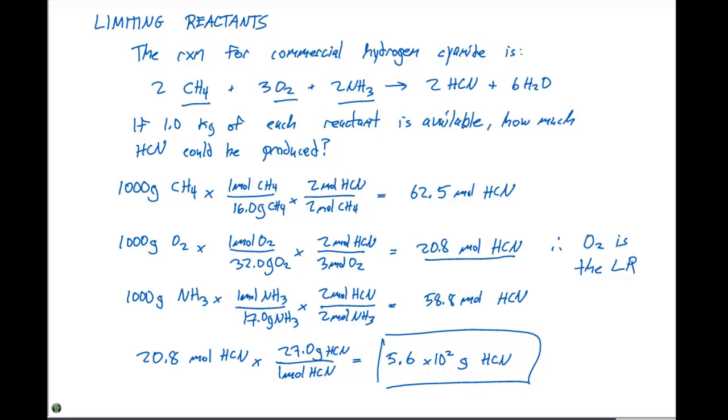To kind of recap, you calculate how many moles of HCN would be produced if all three of these reactants totally reacted. Then investigate which one would be the smallest amount of HCN in terms of moles. In this case, the oxygen produces the smallest amount. We call that the limiting reactant. And then from there, once we determine the amount of moles of HCN produced from the limiting reactant, we can use stoichiometry to calculate the mass of HCN that will be produced.